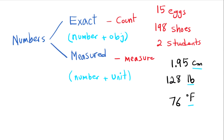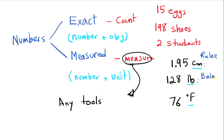If we don't count them, whenever we are going to work on them, we just need to remember that for measured numbers we need to use tools, any tools. For example, for the first one I may use ruler. Let me write that: ruler. For this one I may use balance scale. For this one I may use thermometer.